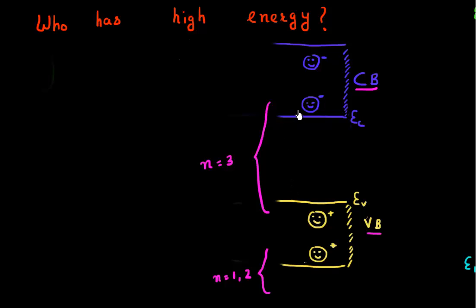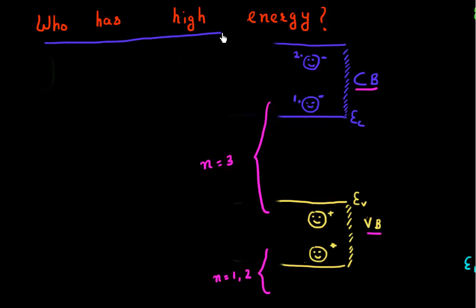Now we are ready to tackle some questions which test our understanding of the band diagram and how these bands result. The question I want to pose in this video is: I have this conduction band and two electrons — electron one and electron two. Both of them look pretty happy. The question is, which of these electrons has higher energy, looking at this band diagram?